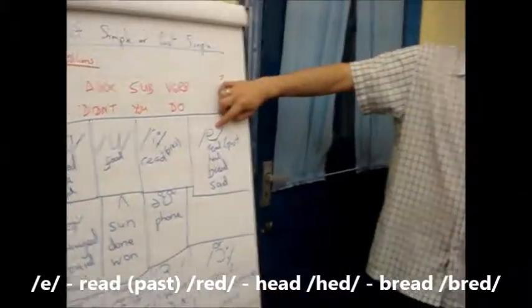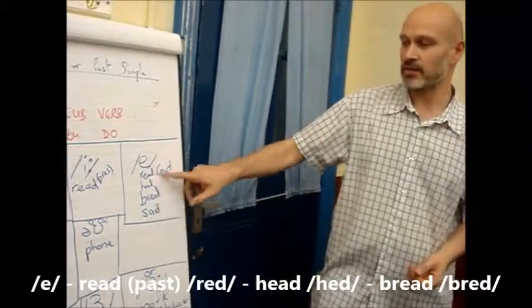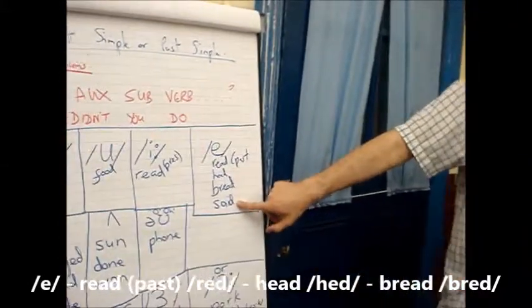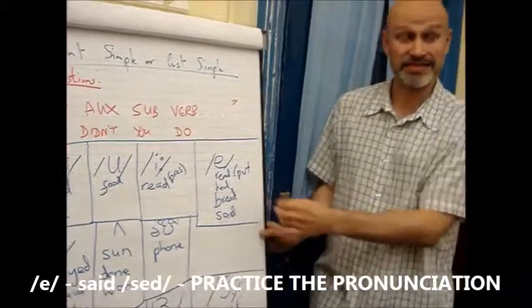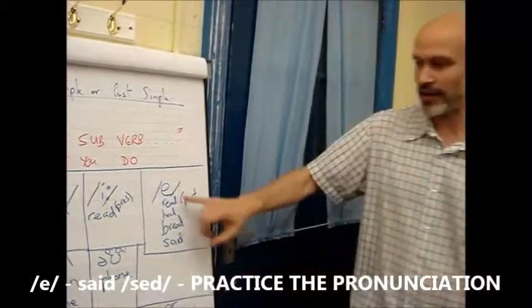We had a few of these sounds. E. Read from the past. Head. Bread. And said. Don't forget, it's not say. It's said. It's got an ee there.